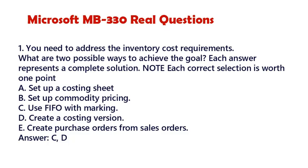Question 1. You need to address the inventory cost requirements. What are two possible ways to achieve the goal? Each answer represents a complete solution. Note: each correct selection is worth 1 point. A. Set up a costing sheet. B. Set up commodity pricing. C. Use FIFO with marking. D. Create a costing version. E. Create purchase orders from sales orders. Answer: C, D.